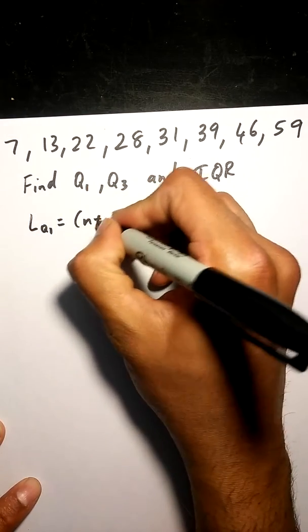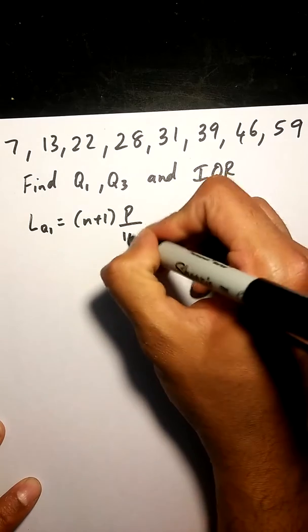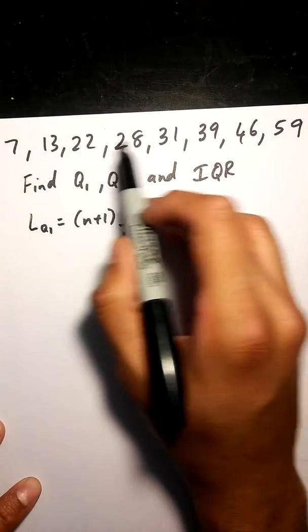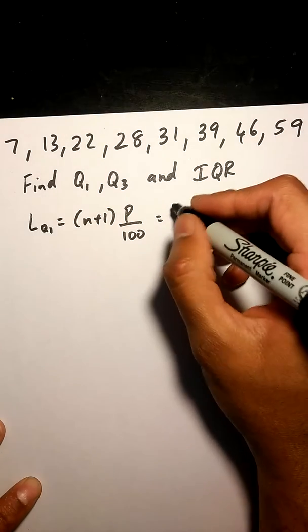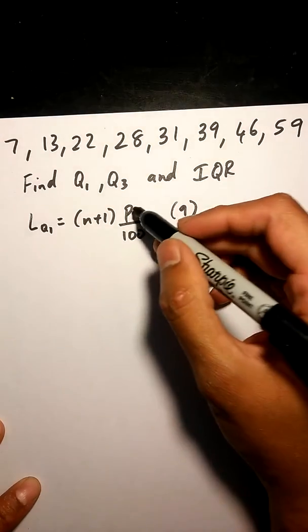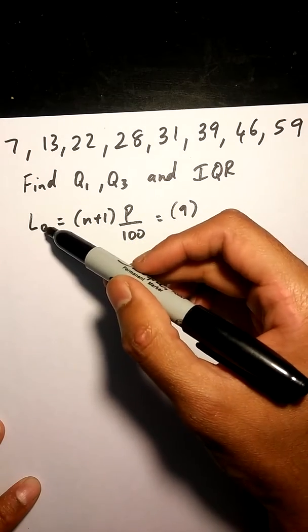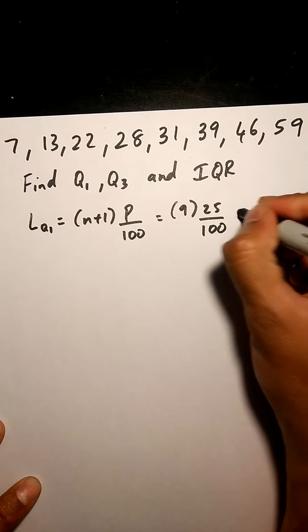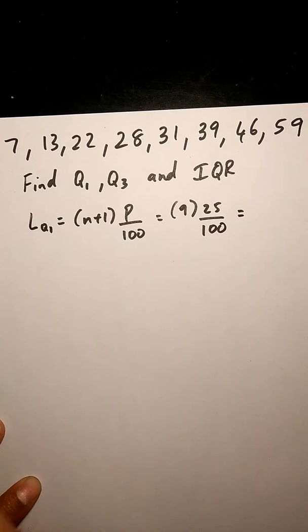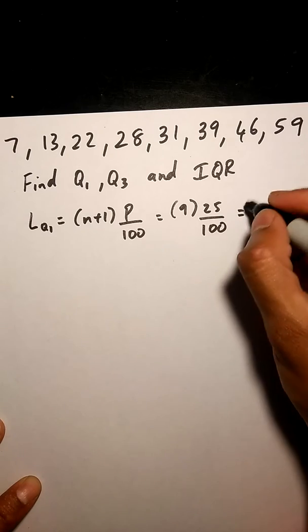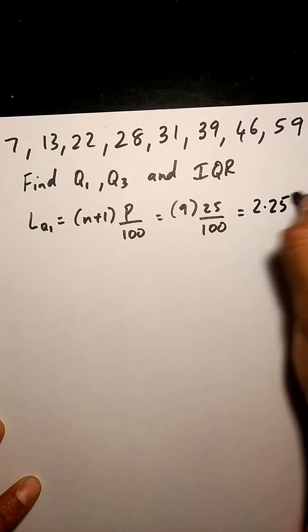It's basically n plus 1 times p over 100. So we know that our n in this case is 1, 2, 3, 4, 5, 6, 7, 8 numbers, so we're going to have 9 times p is always 25 for Q1, so 9 times 25 over 100, which is basically 2.25.